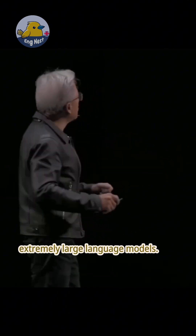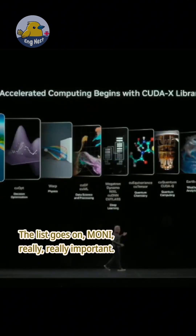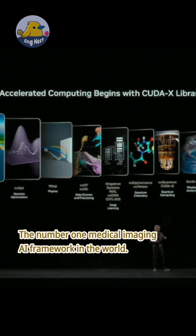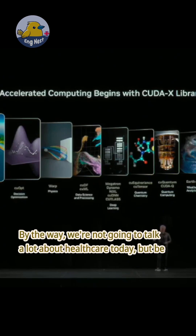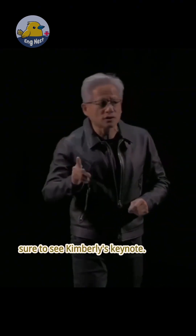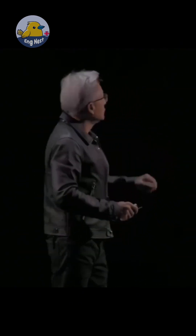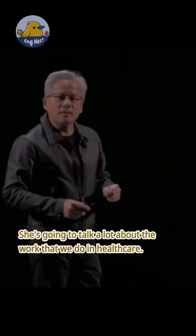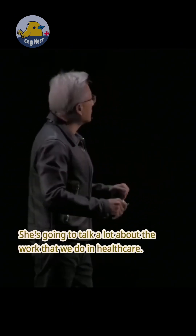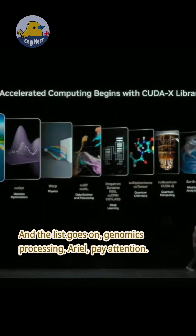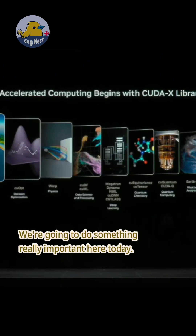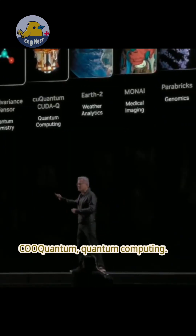— the library on top of it called Megatron Core made it possible for us to simulate and train extremely large language models. The list goes on — MONAI, really really important, the number one medical imaging AI framework in the world. We're not going to talk a lot about healthcare today, but be sure to see Kimberly's keynote — she's going to talk a lot about the work that we do in healthcare.